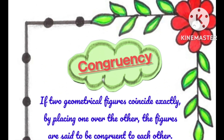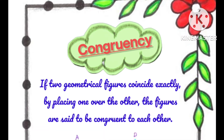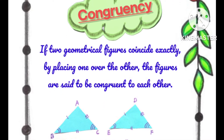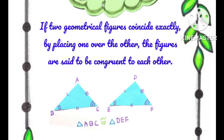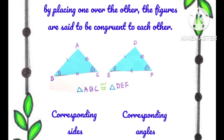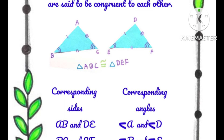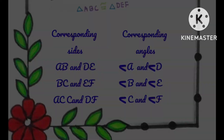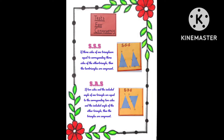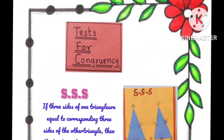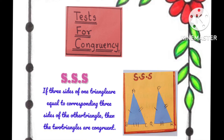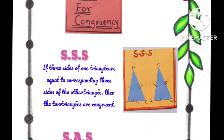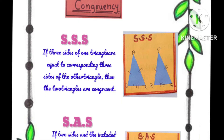Here is the meaning of congruency and its example, including corresponding sides and corresponding angles. Let's see the next page: tests for congruency. Number one is side-side-side, meaning the SSS criteria.